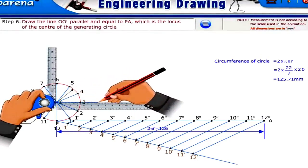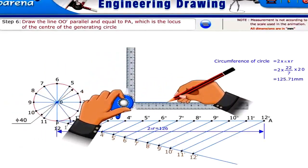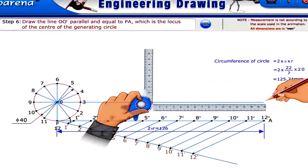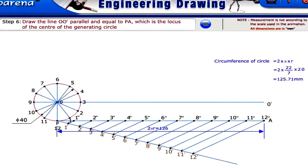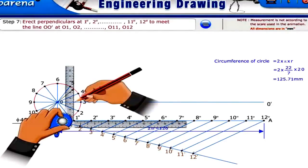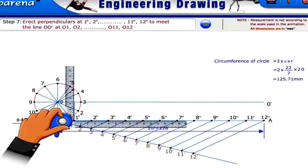Draw the line OO' parallel and equal to PA, which is the locus of the center of the generating circle.